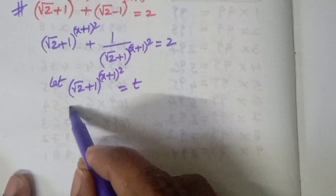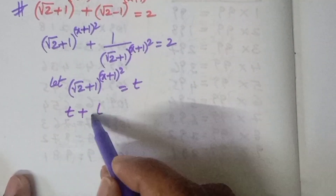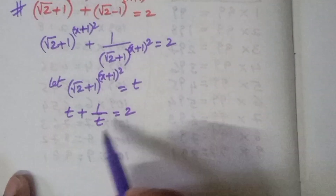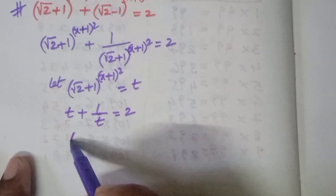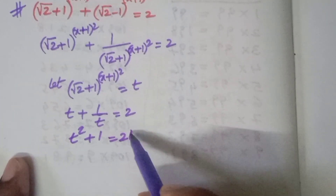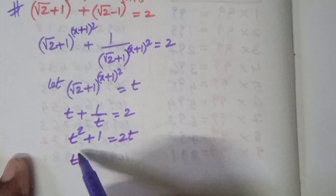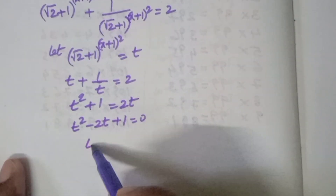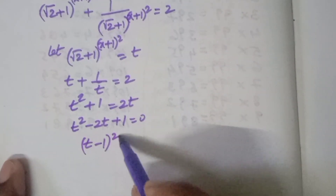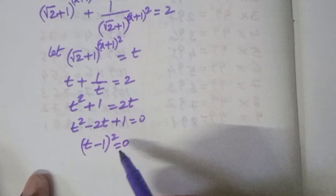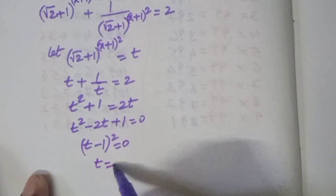Then we get t + 1/t = 2, which gives t² + 1 = 2t, so t² - 2t + 1 = 0. This factors as (t-1)² = 0, giving t = 1.